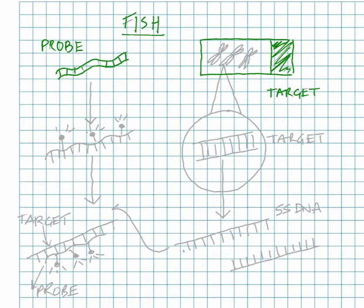When you drop the cells onto the slide, they kind of burst open and their metaphase chromosomes just spread out on the surface of the slide. And so that's got a metaphase spread.